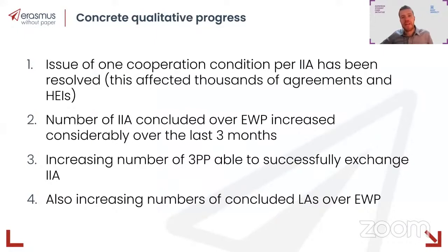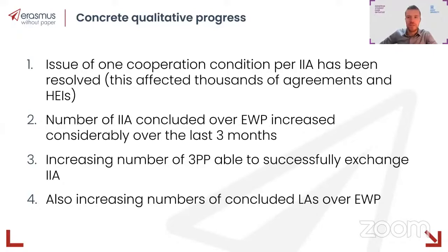Work has also been carried out to solve some issues. For example, regarding cooperation conditions per inter-institutional agreement, this has been solved — it's something that affected thousands of agreements and institutions. When your partner was creating separate agreements for incoming students, outgoing students, incoming staff, and outgoing staff, now at least this is more taken together in terms of agreement. So this should be a relief from the number of agreements in the dashboard, as you can continue working with more consolidated agreements.